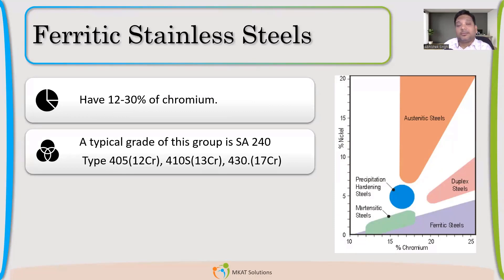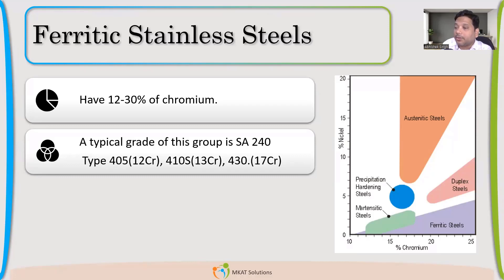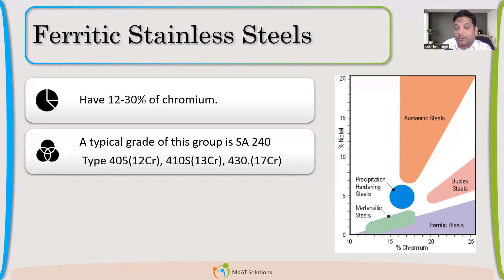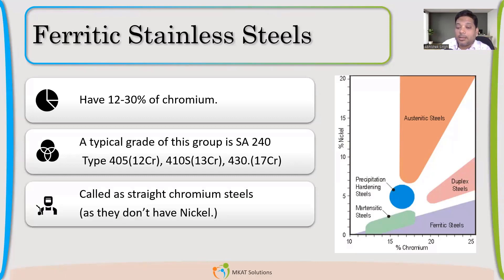Ferritic steels have problems in weldability. The uses of ferritic stainless steel include lining material and tubes — not as a pressure vessel component. You will find this ferritic steel mainly used as a tube or lining material. They are also called straight chromium because they don't have nickel.